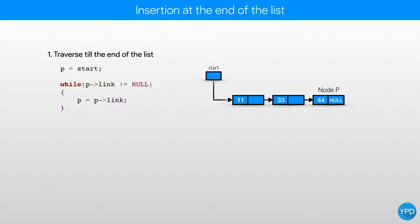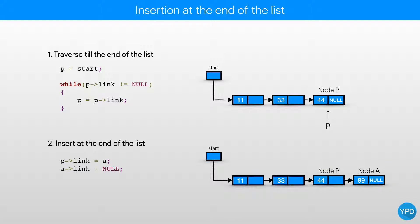First we have to traverse till the end of the list. We take a pointer P, assign it the value of start, and then traverse till the end of the linked list. If you want to know about traversing, I have made a video about traversing — I'll link it in the description. The pointer P starts from the beginning and reaches the end. Then we insert node A at the end: we write P arrow link equal to A, and then assign the link part of node A as null — A arrow link equal to null.